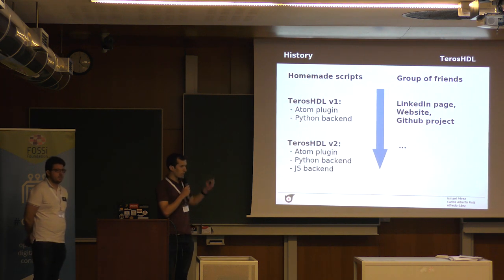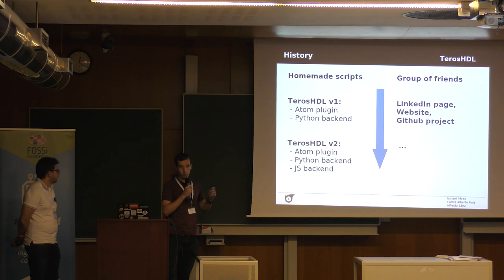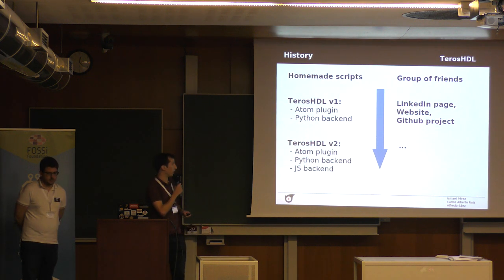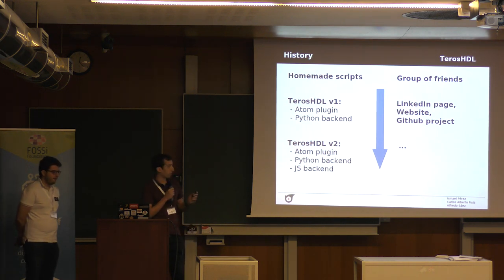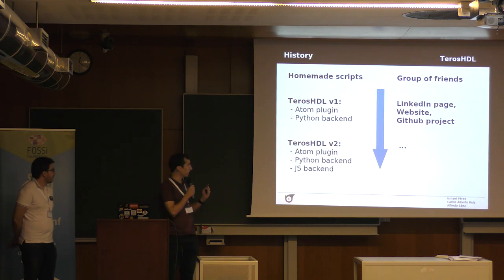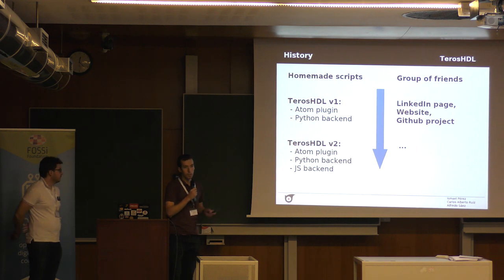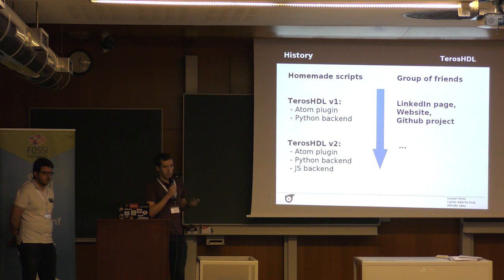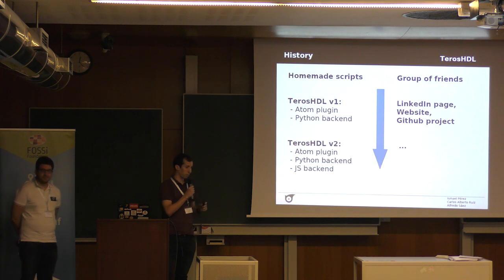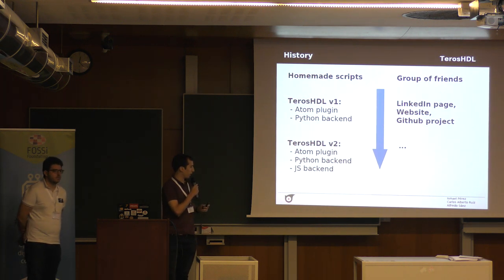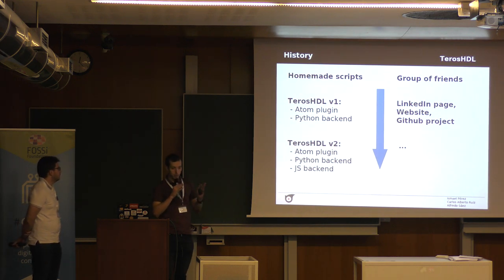As the scripts started to grow, we decided to move to another platform. We started using Atom and developed the first version of Teros HDL — an Atom plugin and a backend, really small at the beginning. We also created a LinkedIn page and a website, and published the project on GitHub for visibility. Some months ago we started working on the second version and changed a lot of things.